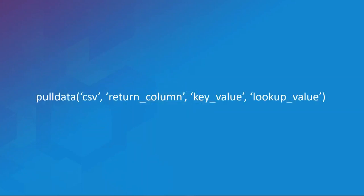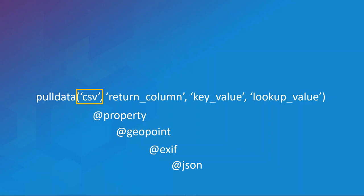Before handling location, we're going to talk about pull data. Pull data is an important function that allows you to extract values from an external CSV or from device and user properties. If you're referencing a CSV, you enter the CSV in the Survey123 media folder without the extension. If you are calling device and user properties, you'll use @property; for GPS data, you'll use @geopoint; and if you're accessing media, you'll use @asset or @json.